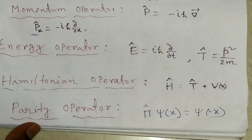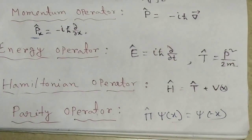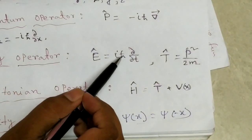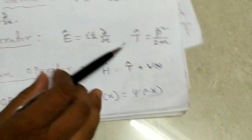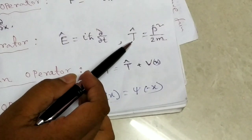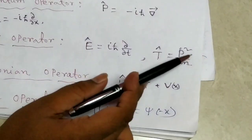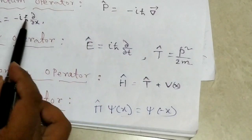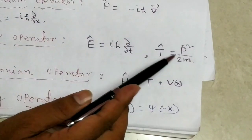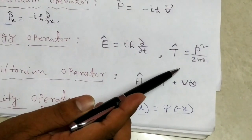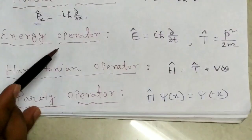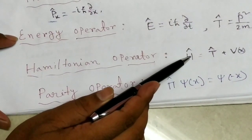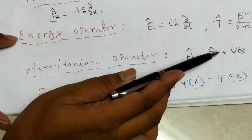The energy operator is E-cap equal to i·h-bar·del/del-t. The kinetic energy operator T-cap equals p²/2m, and since p equals i·h-bar·del/del-x, we can easily find the kinetic energy operator.